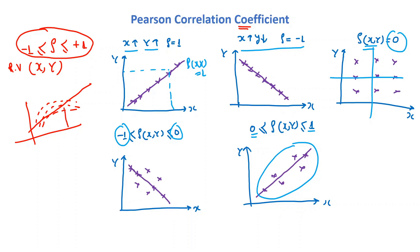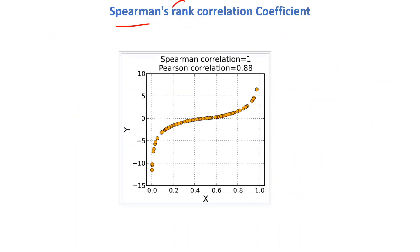So if we use the Pearson correlation coefficient on non-linear data, we will not get a proper coefficient value. To resolve this issue, Spearman introduced a rank-based correlation coefficient, suggesting that if the data has a non-linear pattern, we get a better correlation coefficient value using his method.